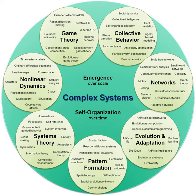One complex system containing humans is the classical political economy of the Scottish Enlightenment, later developed by the Austrian School of Economics, which argues that order in market systems is spontaneous or emergent in that it is the result of human action, but not the execution of any human design. Upon this the Austrian School developed from the 19th to the early 20th century the economic calculation problem, along with the concept of dispersed knowledge, which were to fuel debates against the then-dominant Keynesian economics.